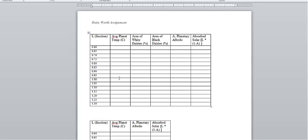The average planetary temperature, the area of white daisies, area of black daisies, and then the planetary albedo which is a combination of the white daisy albedo, black daisy albedo, and the bare ground. This last column you'll have to calculate, but all these other columns will be generated by the simulation environment.